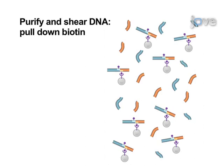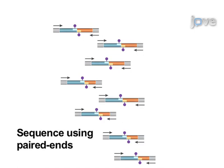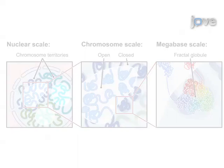The library is sheared, and the junctions are pulled down with streptavidin beads. The purified junctions can subsequently be analysed using a high-throughput sequencer, resulting in a catalogue of interacting fragments.